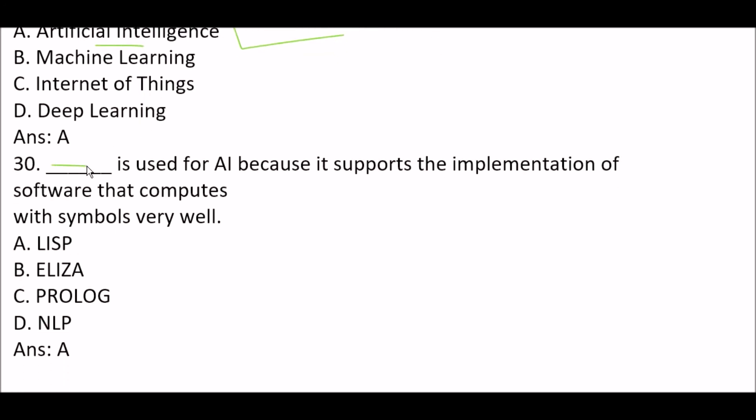Next question: blank space is used for AI because it supports the implementation of software that computes with symbols very well. Option A: Lisp. Option B: ELIZA. Option C: Prolog. Option D: NLP. The right answer is Option A — Lisp is used for AI because it supports the implementation of software that computes with symbols very well.